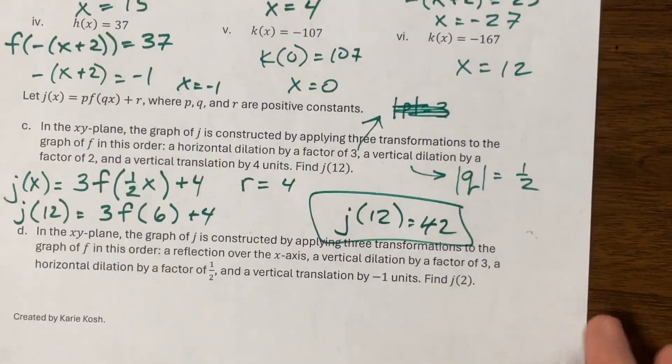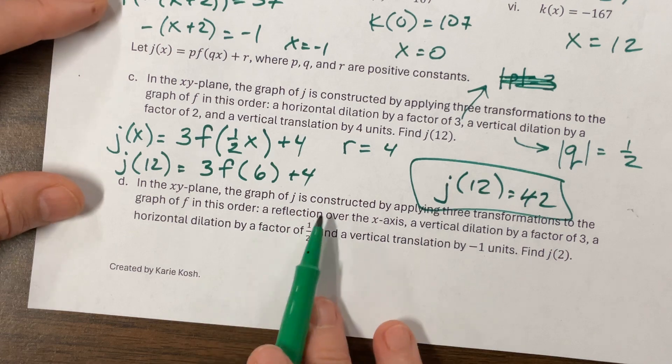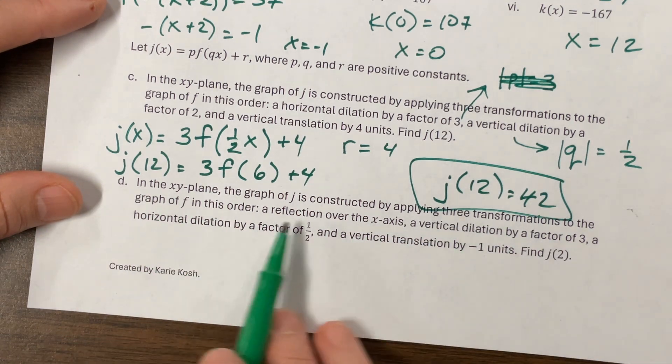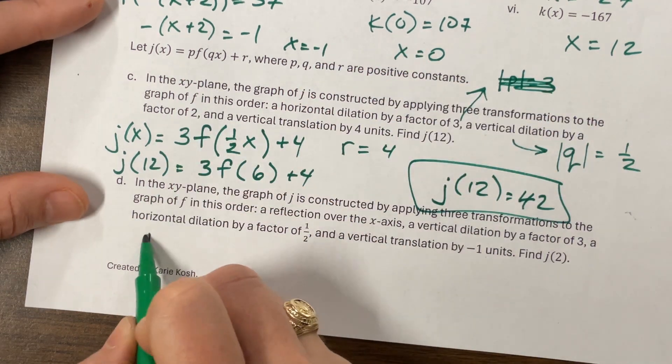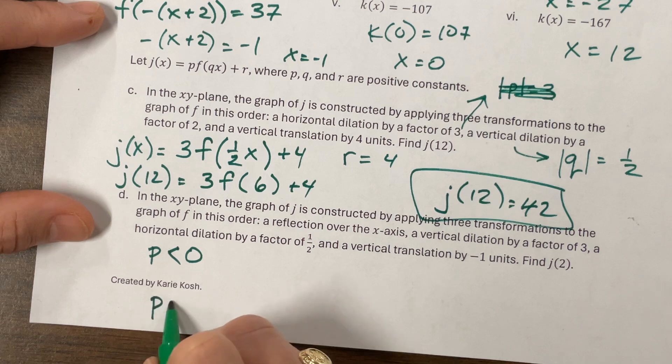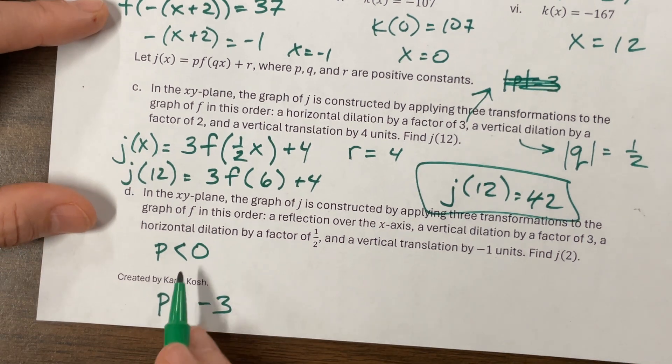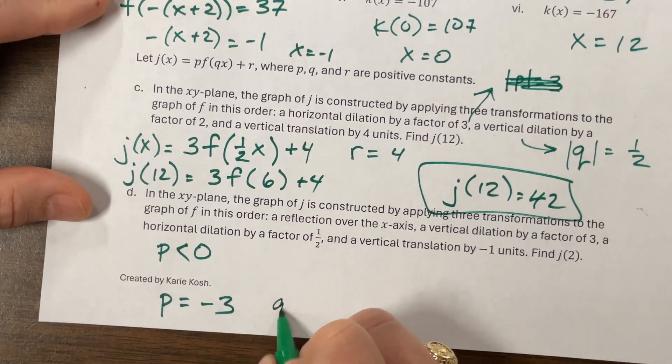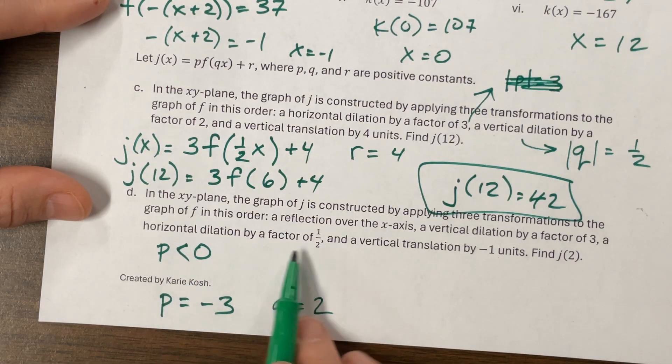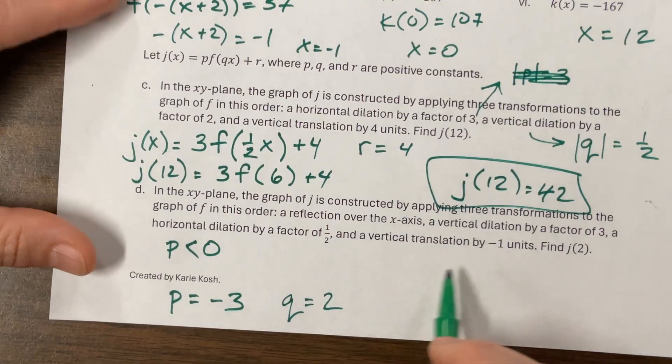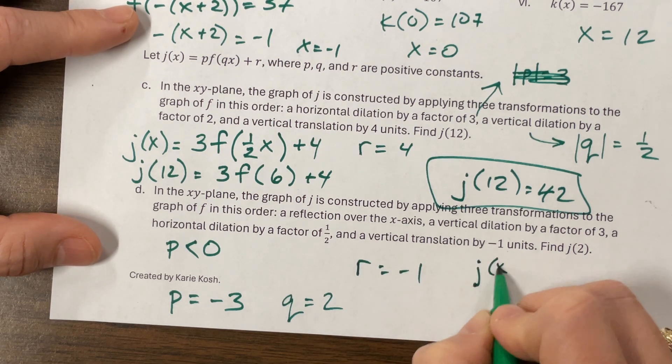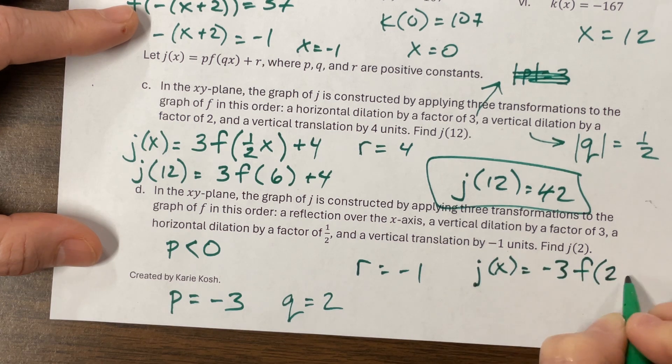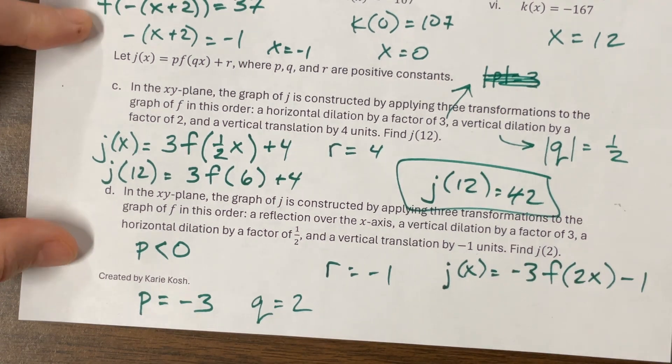Let's see if I can do this next one correctly the first time fingers crossed and an XY plane, the graph of J is constructed by applying three transformations to the graph in this order or reflection over the X axis. Reflection over the X axis means that, that we have to make this P value P is going to be less than zero. And then a vertical dilation by a factor of three. So in particular, P is going to be equal to a negative three, a horizontal dilation. So pulling it this way by a factor of two. So that means Q is equal to, I lied. Horizontal dilation by a factor of one half, which means that Q is equal to two and a vertical translation by a negative one units. So this R will equal negative one. So what do we have?